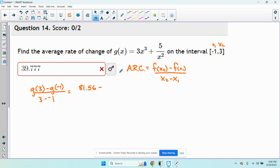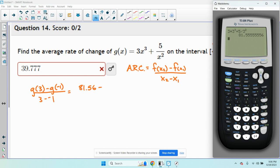Minus g of negative 1. That's going to be 3 times negative 1 to the third, plus 5 divided by negative 1 squared, which is 2.